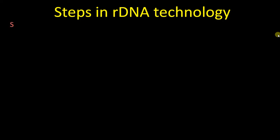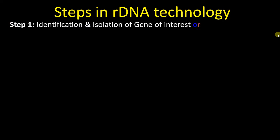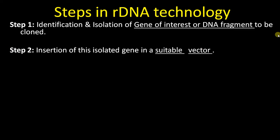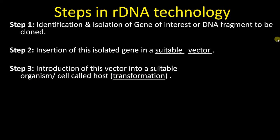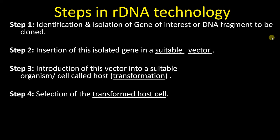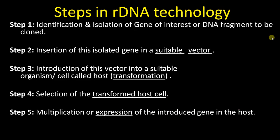Now moving into the steps in recombinant DNA technology. The first step is identification and isolation of the gene of interest — here our gene of interest is the insulin gene. The second step is insertion of this isolated gene into a suitable vector. Then we introduce this vector into a suitable host in a process called transformation. Next we select the transformed host cell, then expression of the introduced gene inside the host to produce insulin in large amounts, and finally we purify the protein.